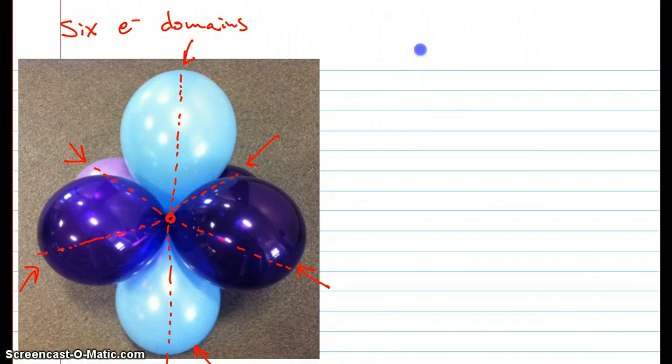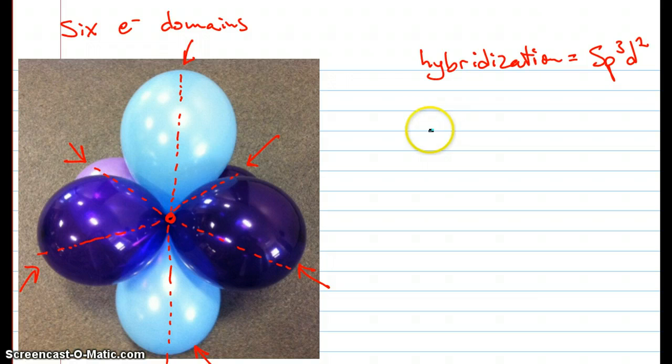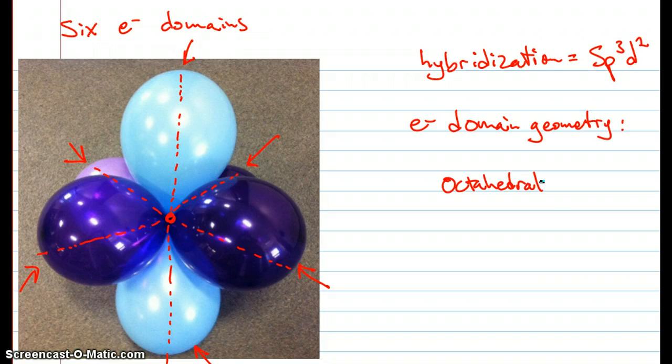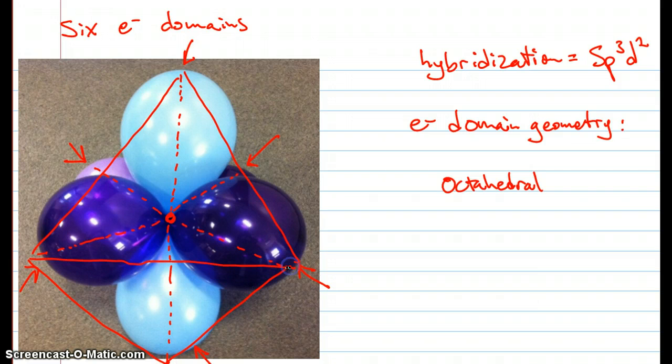This type of hybridization is called SP3D2, and the electron domain geometry is octahedral. That's because the bond axes point to the corners of a regular octahedron, which is two square pyramids stacked base to base. So I can inscribe that octahedron on this diagram for you. There's a leading edge. There's a leading edge. And there's a leading edge. There's the bottom corner. And then the other sides are sort of behind and difficult to see.